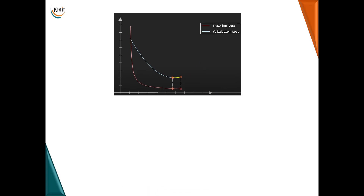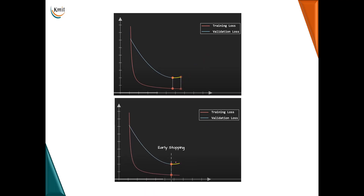The moment we find an increase in the validation loss, we stop the training of our model — that is early stopping. However, early stopping has the drawback that the validation loss is stopped but not further reduced. So to reduce this validation loss, the dropout layer is introduced. In most cases we don't use early stopping; we go for the dropout layer to reduce overfitting.